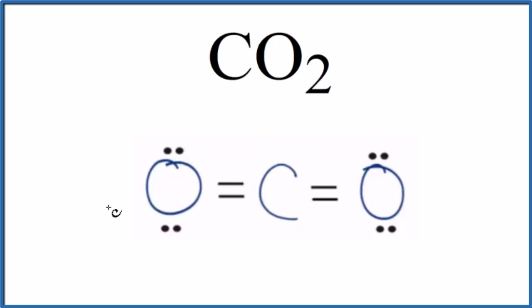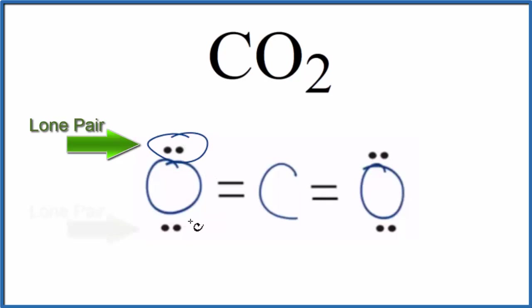To recap for CO2: when we talk about lone pairs on the carbon, there aren't any lone pairs—all the electrons are involved in chemical bonds. But on the oxygen we have two lone pairs, same over here. This is Dr. V with the number of lone pairs for CO2, carbon dioxide. Thanks for watching.